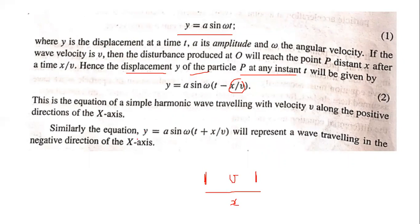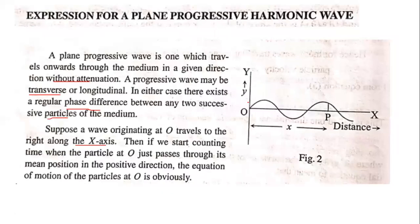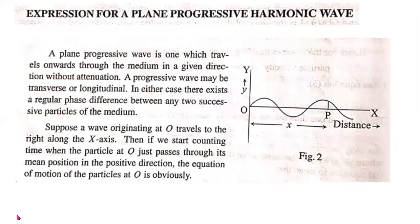Similarly, the equation y equals a sin omega (t plus x by v) will represent a wave traveling into the negative direction, the backward direction. This is the equation for wave traveling in the negative direction of the x-axis.